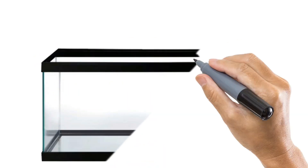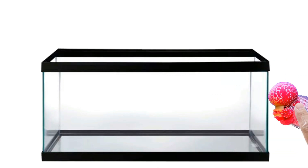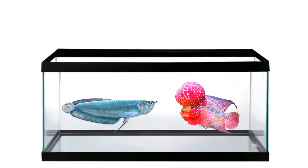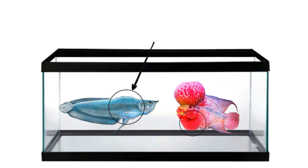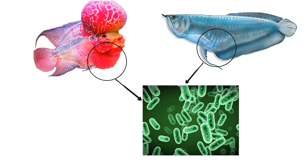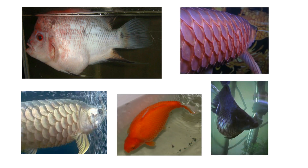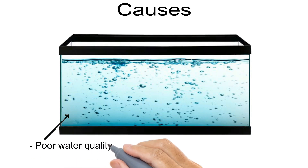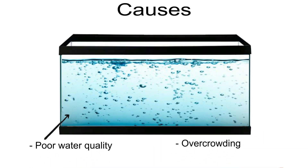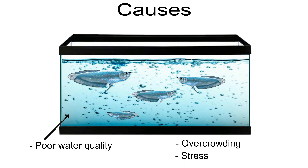When cultivating an aquarium, you are likely to run into a variety of freshwater aquarium fish diseases and conditions, including dropsy. In most cases, dropsy is the result of a bacterial infection caused by Aeromonas — a bacteria commonly found in most fish tanks. Poor water quality, overcrowding, and stress can make your fish more susceptible to this condition.